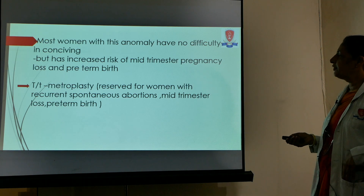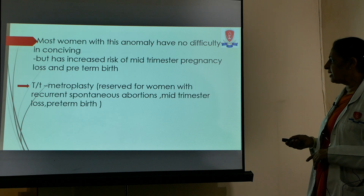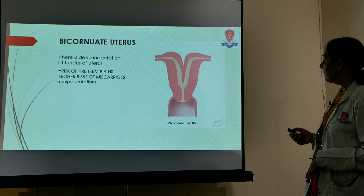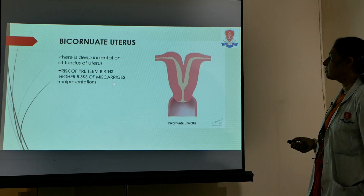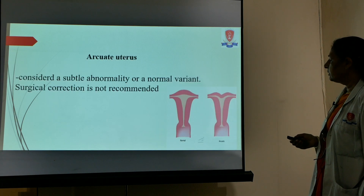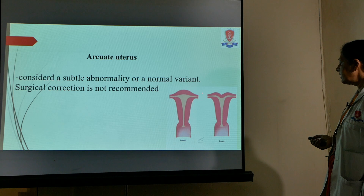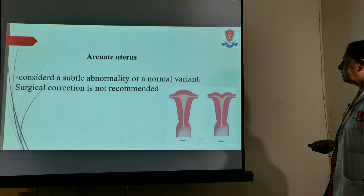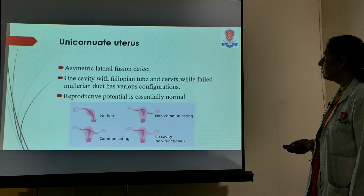Most women with a septate uterus anomaly have no difficulty conceiving but have an increased risk of mid-trimester loss; treatment may be metroplasty, though metroplasty is not routinely recommended for all anomalies. Bicornuate uterus has a deep indentation at the fundus with risks of preterm deliveries, higher risk of miscarriages, and malpresentations. Arcuate uterus is where there is a slight dimpling at the fundus with no septum; this is considered a mild abnormality or a normal variant, and surgical correction is not recommended.